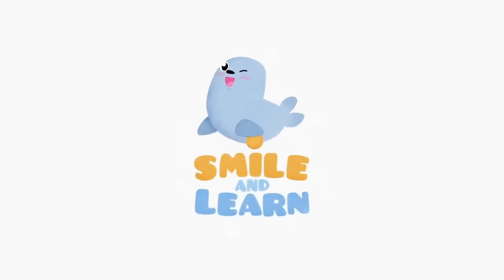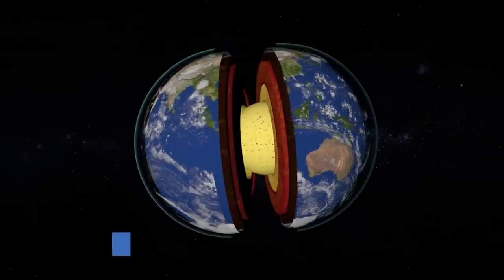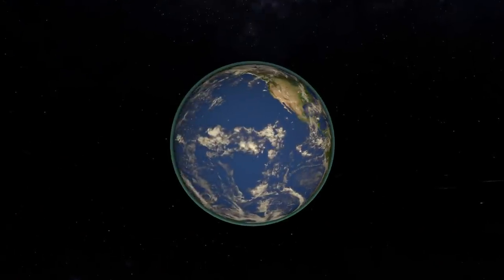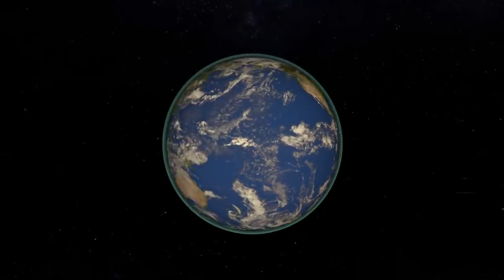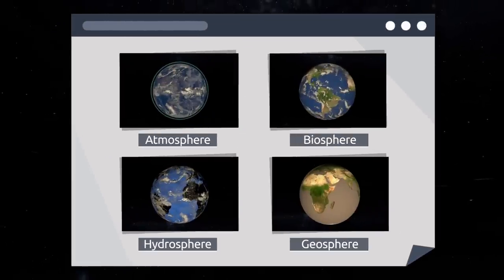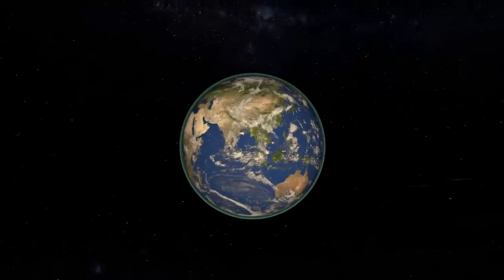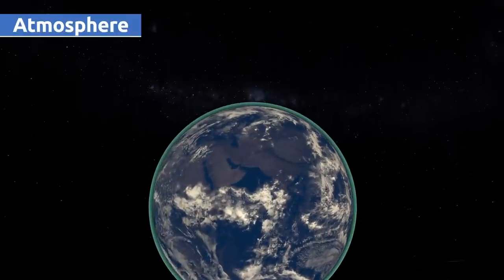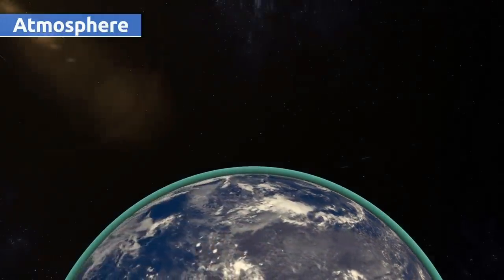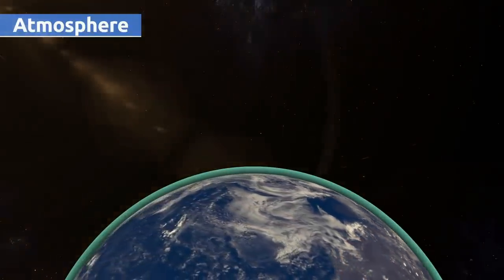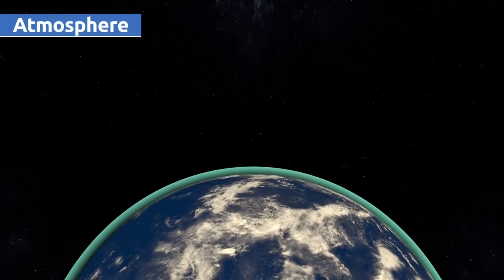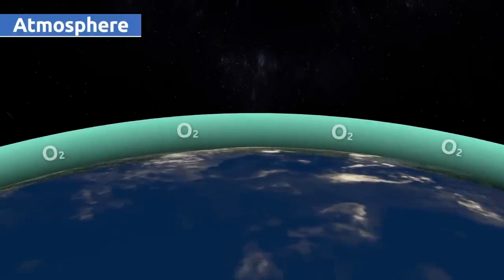Welcome to Smile and Learn. Today we're going to learn about the layers of the earth. The earth is formed by four different layers: the atmosphere, the biosphere, the hydrosphere, and the geosphere. The atmosphere is the outer layer that surrounds the earth, formed by gases that protect the planet from outer space dangers like solar flares or small objects flying in space. Oxygen, an essential element for life, is found in this layer.